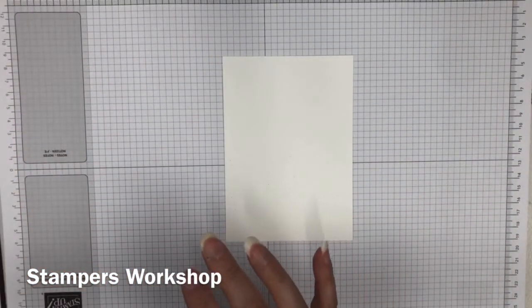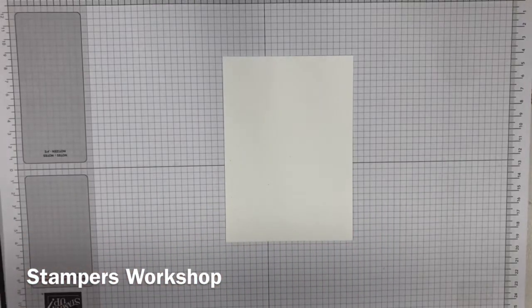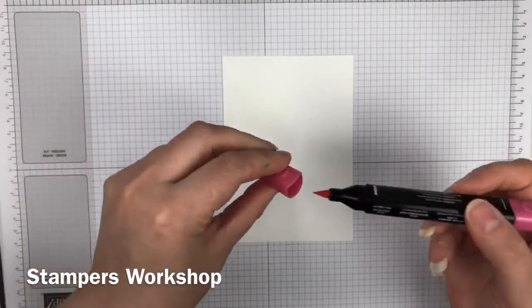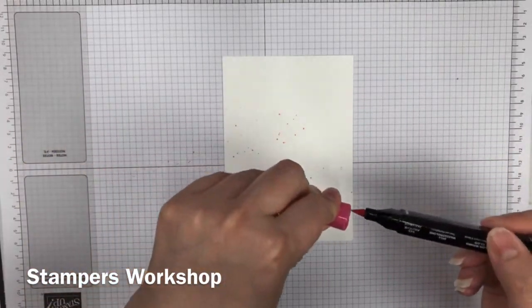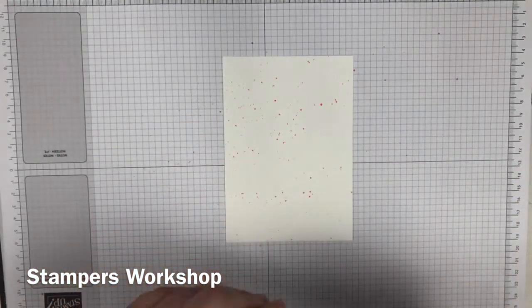Let me choose another one. Let's try Melon Mambo. You can see there's a little bit more, a little brighter. It does go everywhere, so just be mindful of what projects are around you.